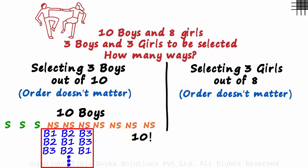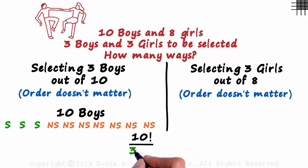But all these are the same. The order does not matter. So to eliminate the repeated cases, we divide this by 3 factorial. And as there are 7 boys that are not selected, we divide it again by 7 factorial. That's the answer for this part. These many ways in which we can select 3 boys out of 10.